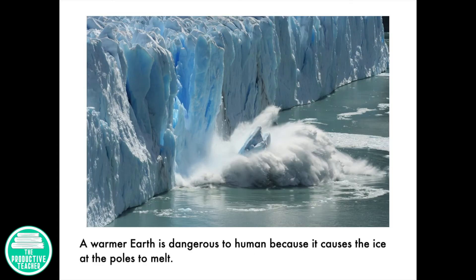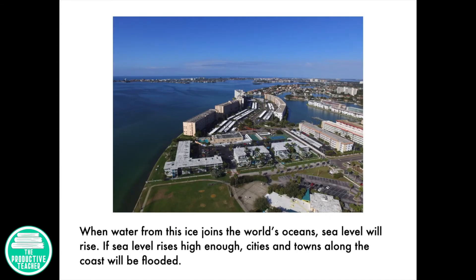A warmer Earth is dangerous to humans because it causes the ice at the poles to melt. When water from this ice joins the world's oceans, sea level will rise. If sea level rises high enough, cities and towns along the coast will be flooded.